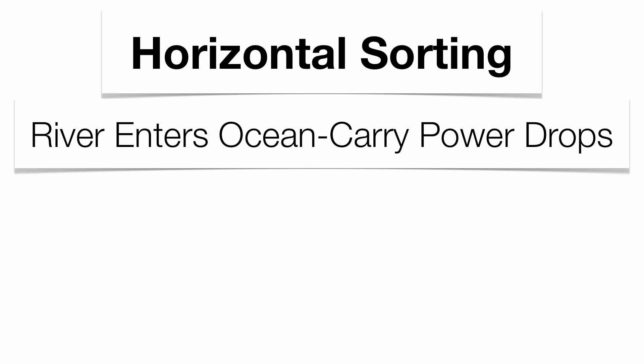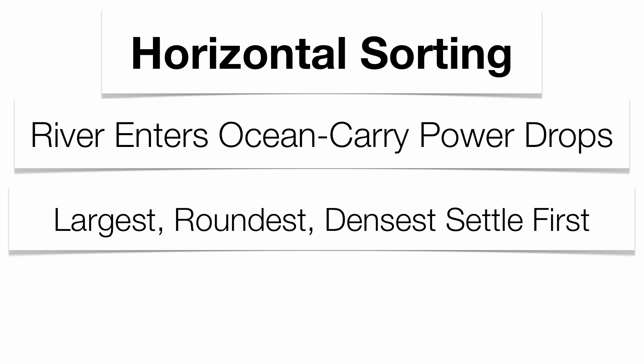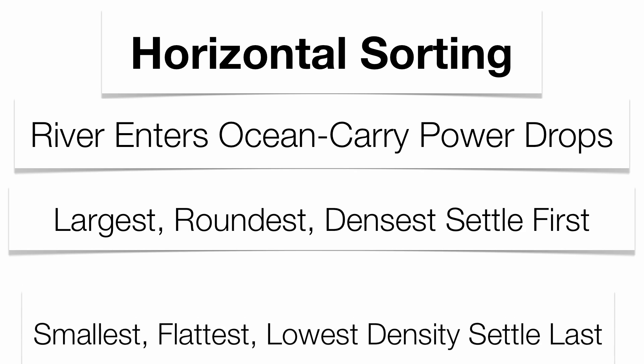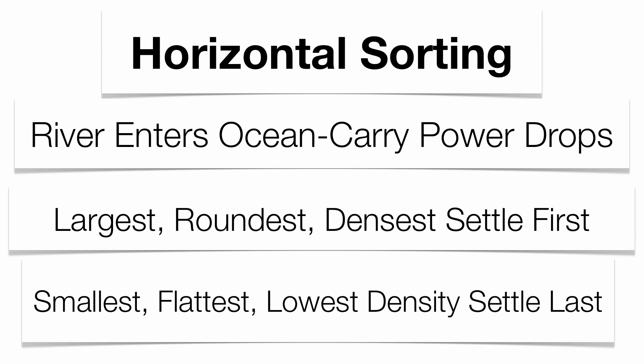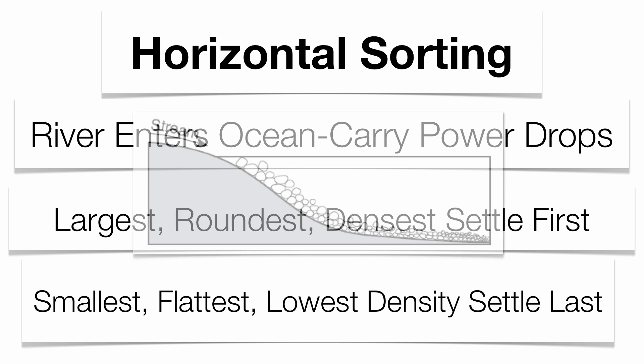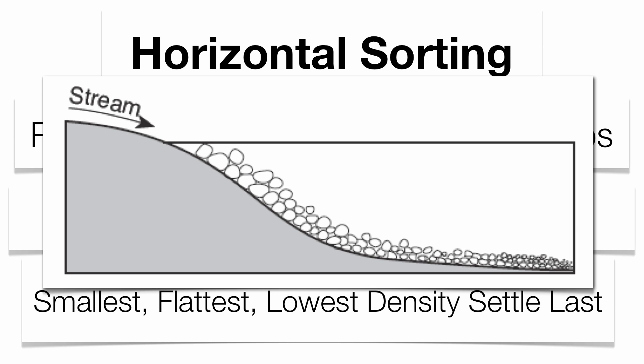Now these sediments are going to be organized two different ways. One is what we call horizontal sorting. This happens when a river enters an ocean and the velocity and carrying power dramatically drop. Your largest, roundest, and densest will sink out first. Your smallest, flattest, and least dense is going to settle out last — giving you boulders, cobbles, pebbles, sand, silt, and finally clay. That's horizontal sorting.